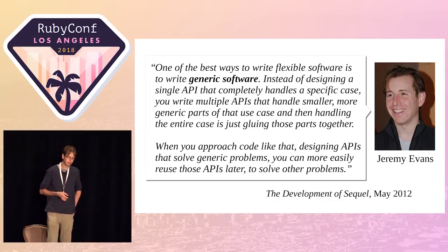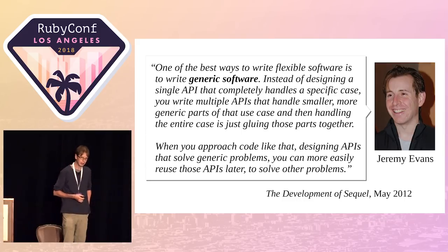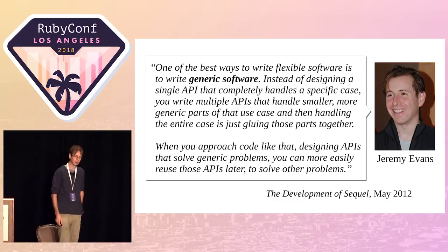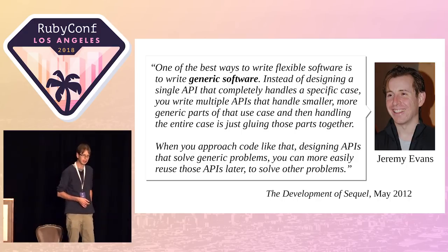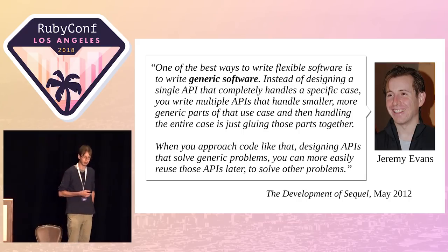A while ago I was looking for inspiration in open source work, and I found this quote buried in slides from 2012 where he gave a talk on the development of Sequel. He says: 'One of the best ways to write flexible software is to write generic software. Instead of designing a single API that completely handles a specific case, you write multiple APIs that handle smaller, more generic parts of that use case. And then handling the entire case is just gluing those parts together. When you approach code like that, designing APIs that solve generic problems, you can more easily reuse those APIs later to solve other problems.' I thought this was a great quote, and it really resonated with the work I was doing developing generic components.